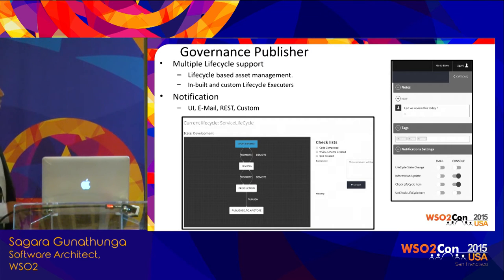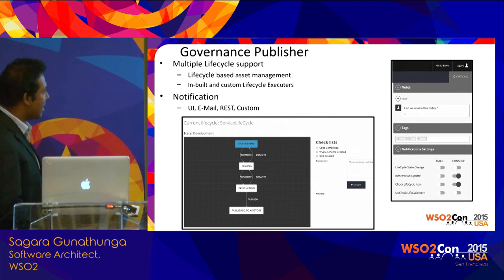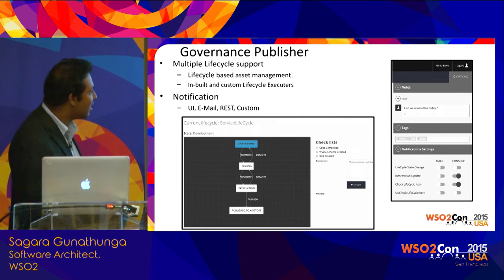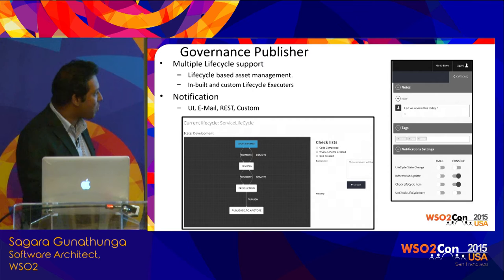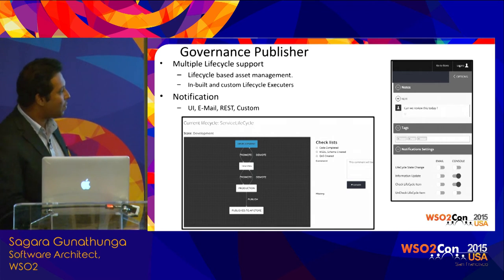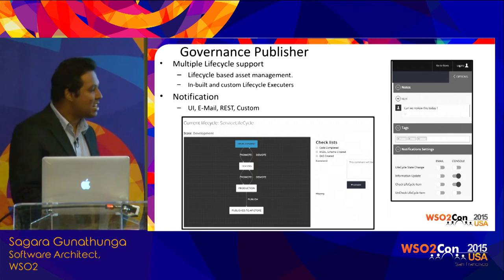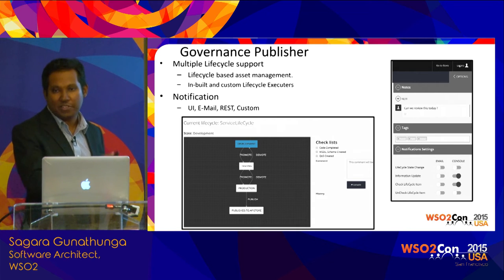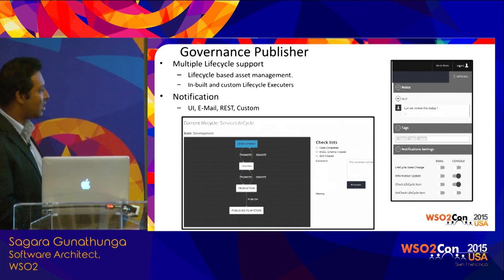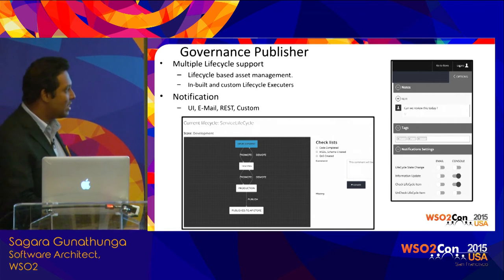These are some of the new Publisher features. Unlike the admin console, we now have a graphical view for managing life cycles — you can see what states exist, what the current state is, and you can promote or demote. We also have built-in and custom life cycle executors, which trigger tasks when you move between states. In the same UI you can subscribe and set up notifications — for example, a manager can set up an email notification when a service moves from development to test, without touching any admin console or configuration file. There are also notes, so a senior architect can add comments about a new service.